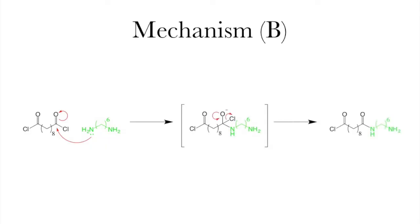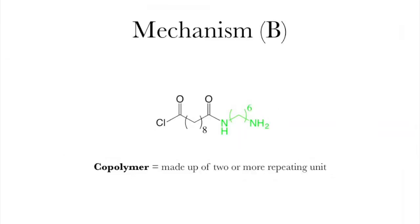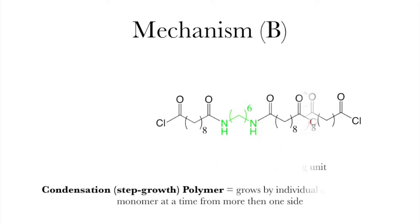This creates a very strong amide bond, the same kind we have in proteins. Now unlike part A, nylon is a copolymer, which is to say it's made up of more than one monomer. Now this can continue polymerizing individual units, like this, or it can attach multiple units at a time. This can also happen from both sides of the polymer. We call this type of mechanism condensation or step growth.